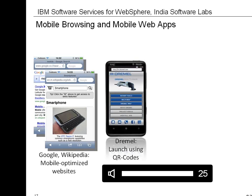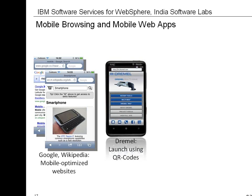Some companies have created a mobile website that looks somewhat like a native app. One interesting example is an application developed by Dremel, a hardware tools manufacturer, which created a mobile version of their product catalog. They also created a QR code which allows navigation to a specific product from a printed page. The user scans the QR code with a QR reader using the phone's camera, which redirects to the right place within the online catalog. The look and feel is exactly similar to a native app, but it's not a native app.